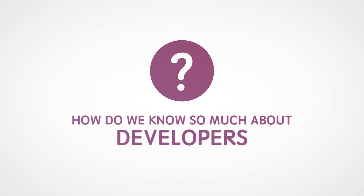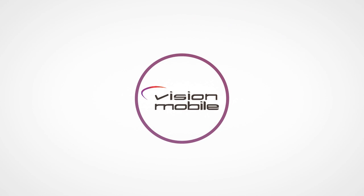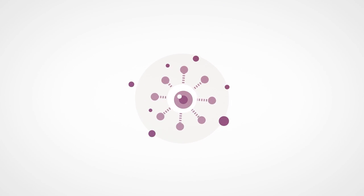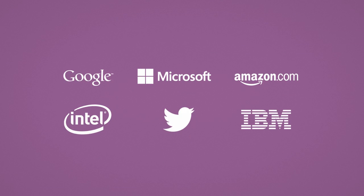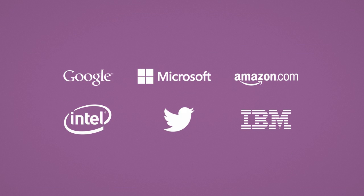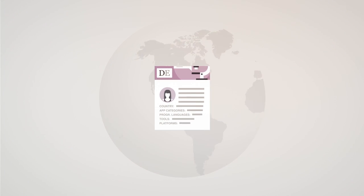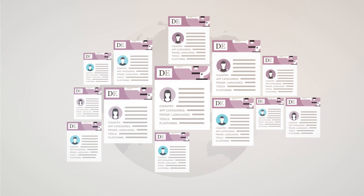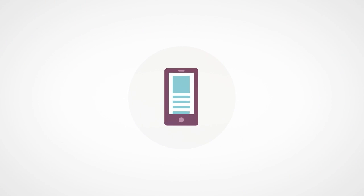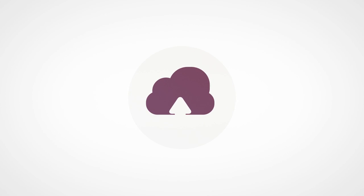How do we know so much about developers? Vision Mobile is a leading research firm in the app economy, tracking developer trends since 2010 and trusted by the top technology brands. Through our developer economics surveys, we engage tens of thousands of developers from all over the world, across mobile, Internet of Things, desktop and cloud.